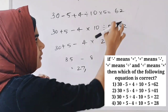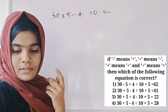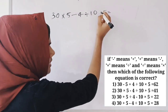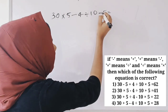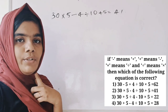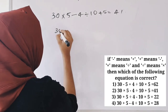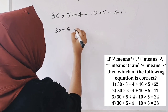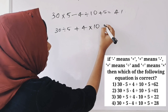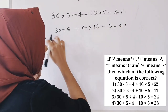Checking option one: 2 divided by 10 plus 5 plus 5 is equal to 40. Checking another option: 30 into 5, then 30 divided by 5, minus plus 4 divided by into 10, plus minus is equal to 41.